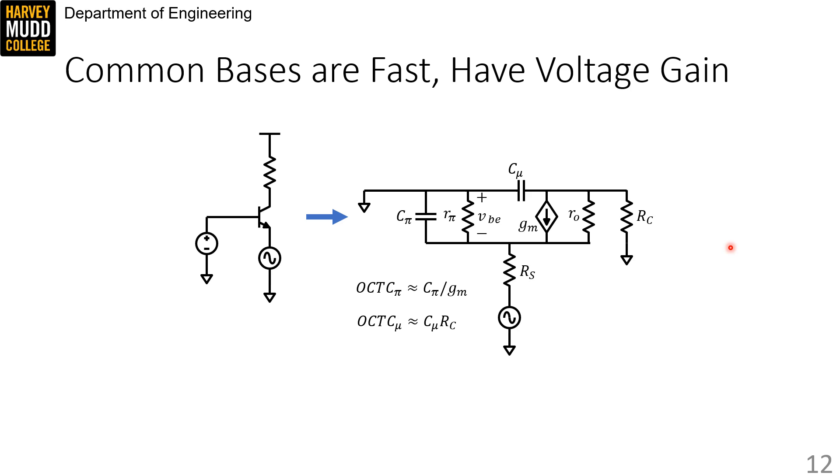The input impedance of the common base is 1 over GM, so cπ sees an impedance of 1 over GM, meaning that its open circuit time constant is small.